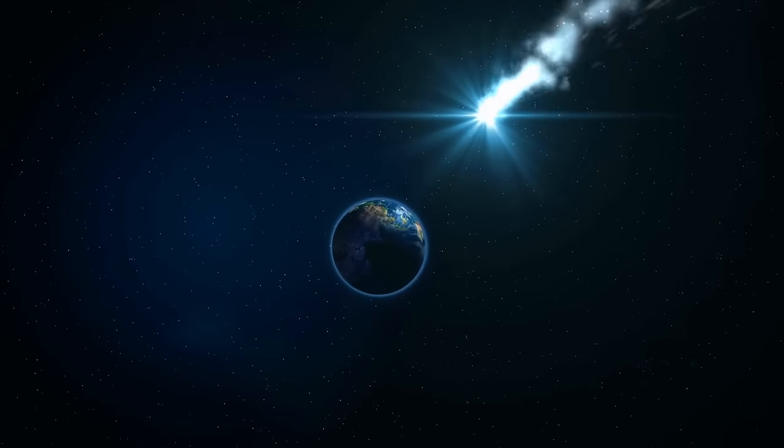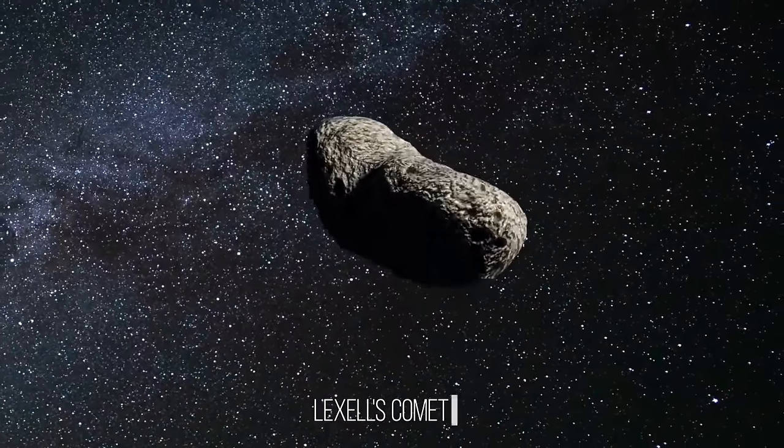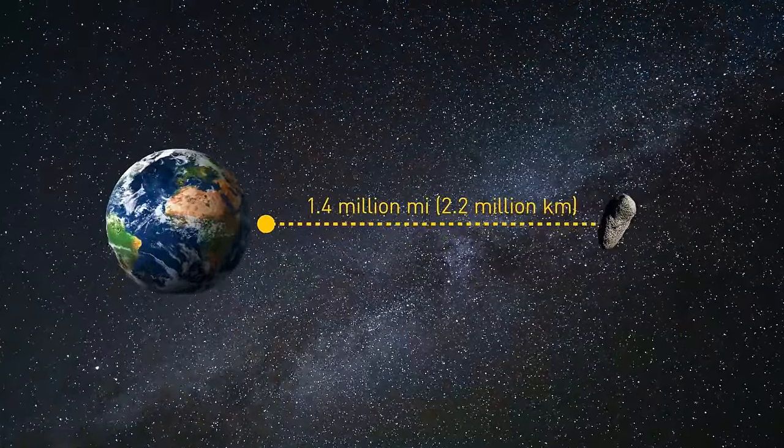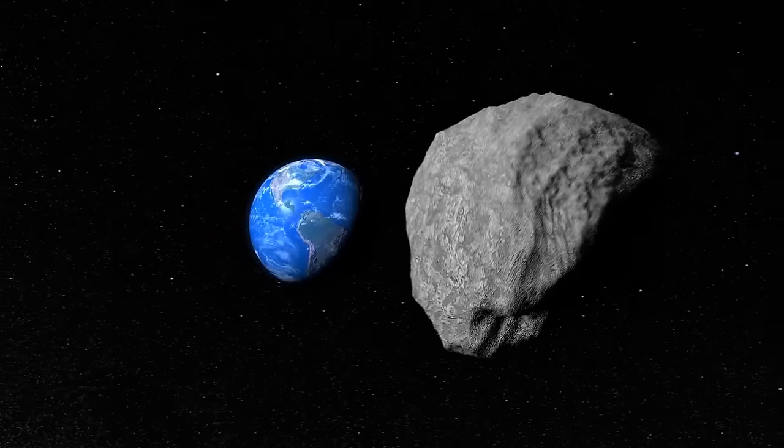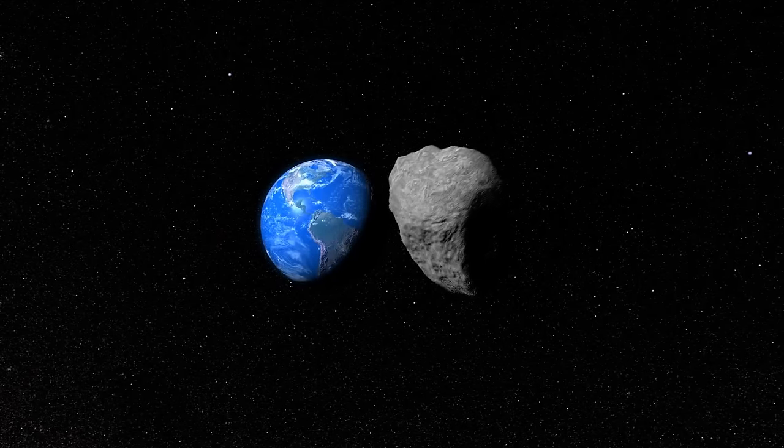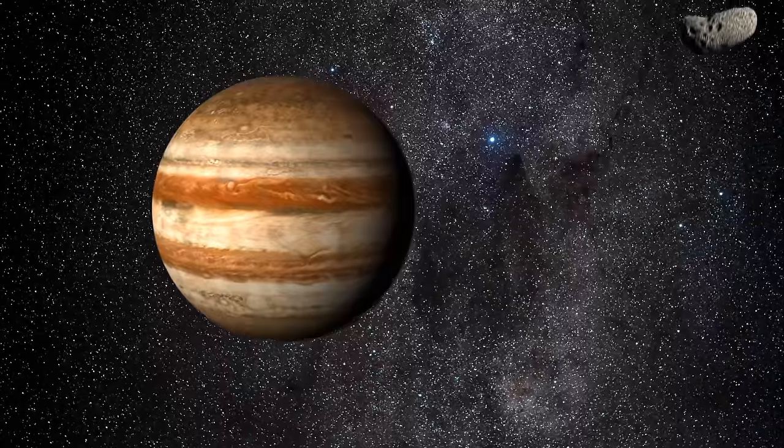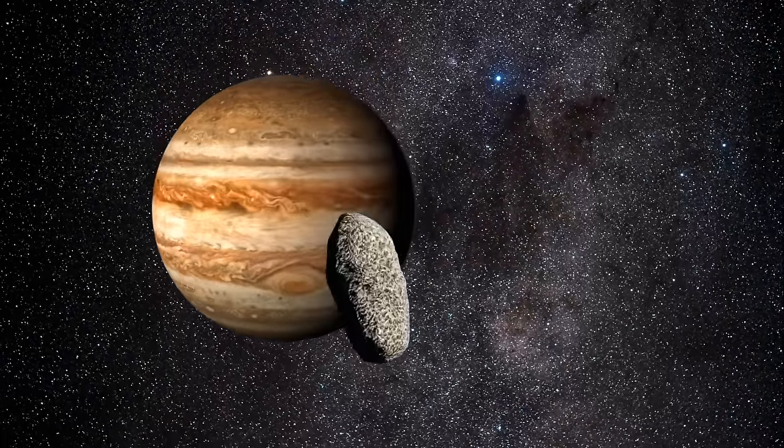It threw comets in our direction. In 1770, Lexell's comet appeared near the Earth. Our planet and this object were separated by only 1.4 million miles, close to nothing in space terms. Lexell's comet came closer to Earth than any other comet in human history. The object could have stopped life on Earth. The comet flew too close to Jupiter. The giant caught it and sent it in our direction.